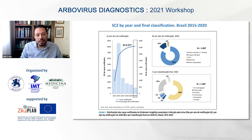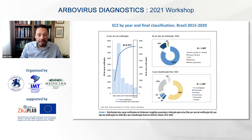The total number of congenital Zika syndrome cases — concentrated in 2015 and 2016 — has decreased over time, and 2020 had the fewest notifications of Zika congenital syndrome.